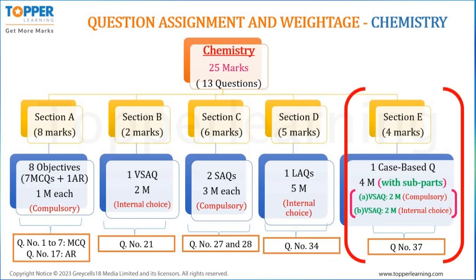In Section E, 4 marks are allotted to chemistry. Here, 1 case-based compulsory question of 4 marks will be asked. These 4 marks will be distributed between 2 subparts — subquestion A and subquestion B — of 2 marks each. Subquestion A will be compulsory while subquestion B will have internal choice, meaning from 2 questions you need to answer only 1. Question number 37 will be the case-based question from chemistry.